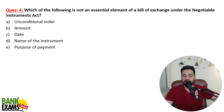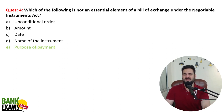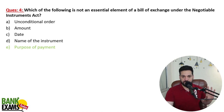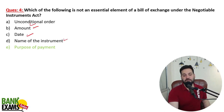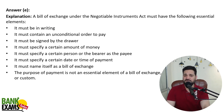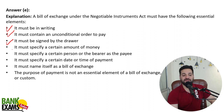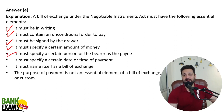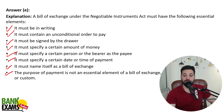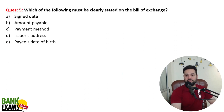Which of the following is not an essential element of a bill of exchange under the Negotiable Instruments Act? A bill of exchange must be in writing, contain an unconditional order to pay, be signed by the drawer, specify a certain amount of money, specify the person or bearer as the payee, specify a certain date or time of payment, and name itself as a bill of exchange. The purpose of the payment is not an essential element — it may or may not be mentioned.